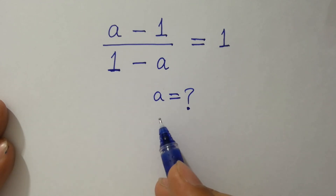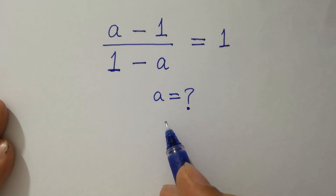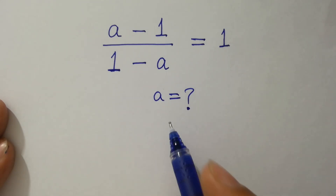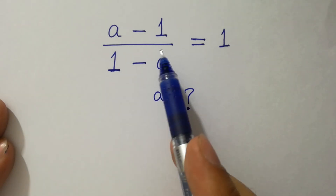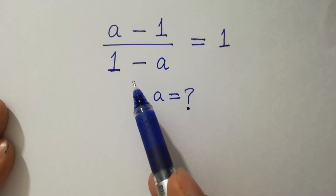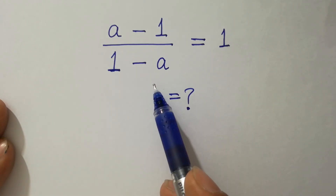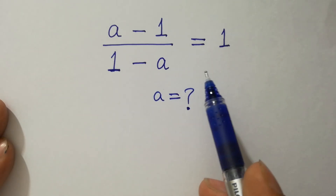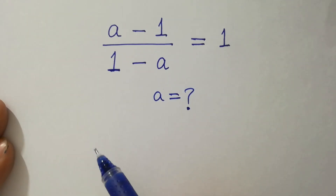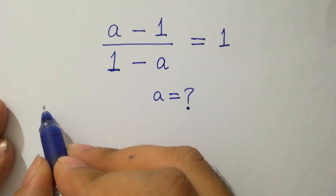Hello friends, find the value of a if (a minus 1) over (1 minus a) equals 1. Let's have a solution.